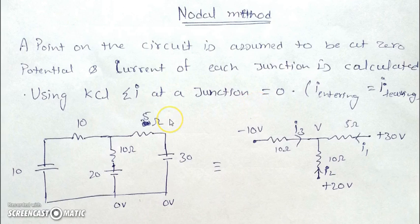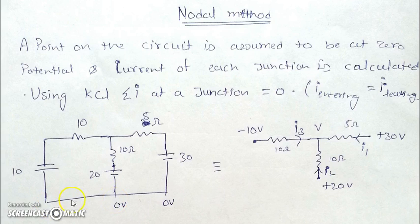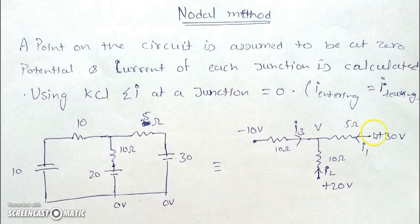To elaborate, I have taken an example with three cells and resistances of 10, 20, 30, and Q ohms. We assume this point to be zero — we could also make it ground. So these three points are at zero volts. We then assign potentials at the node: if this is zero, this point will be plus 30 volts.